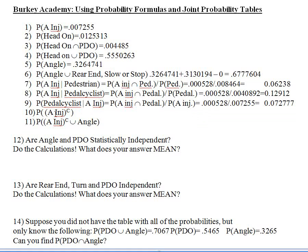Number 10: the probability of A injury with the complement symbol — meaning what's the probability there was not an A injury involved? Using the complement rule: one minus the probability that an A injury was involved. So 1 minus 0.007255, which equals approximately 0.992745. This is the probability there was not a severe disabling injury as the most severe injury in the accident.